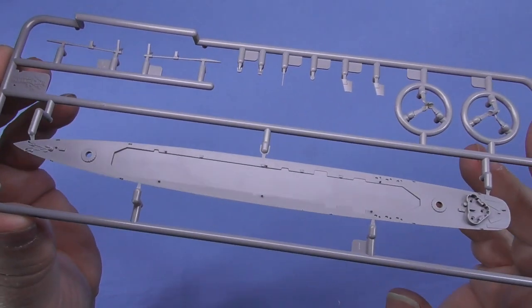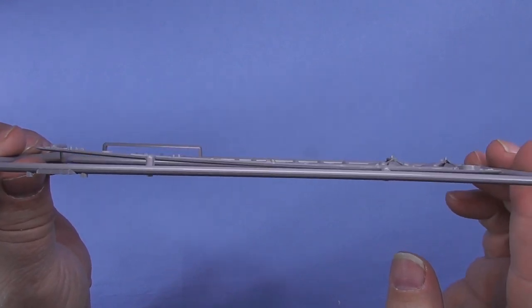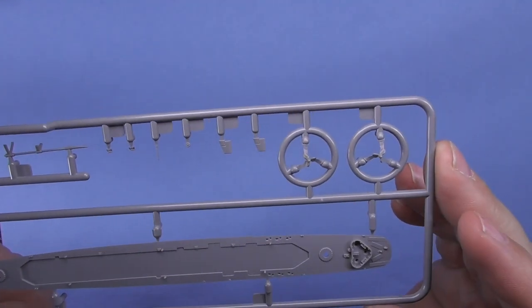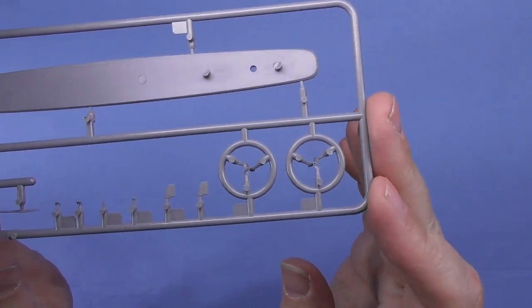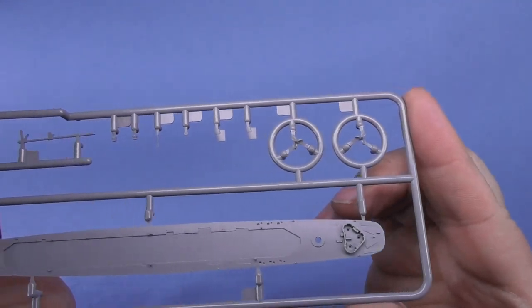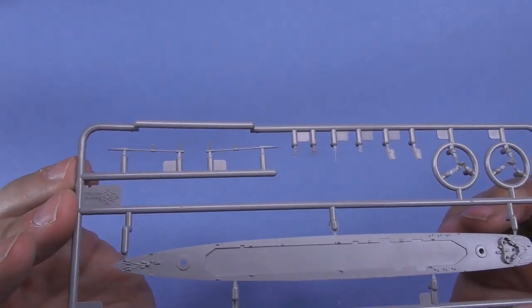You can see it's nicely detailed, good plastic, bent a little bit. Your props, it's going to take a little bit to cut out, careful cutting, because they're very small. And your rudders and your prop shafts.